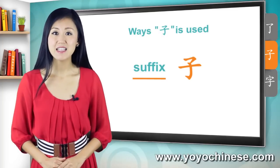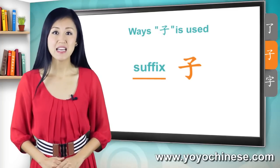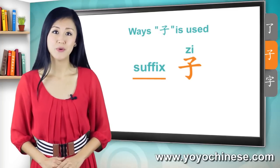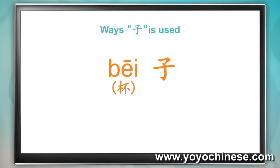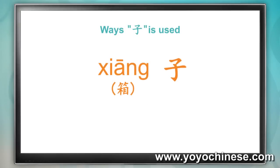Especially in nouns. And in those cases, it usually takes a neutral tone, like in the words 杯子 (cup) and 箱子 (box).